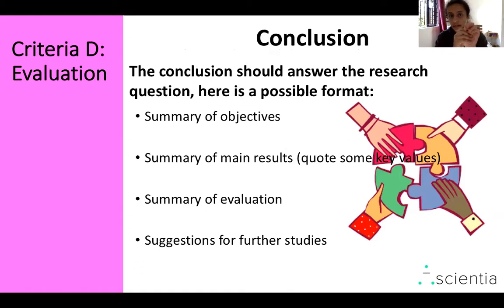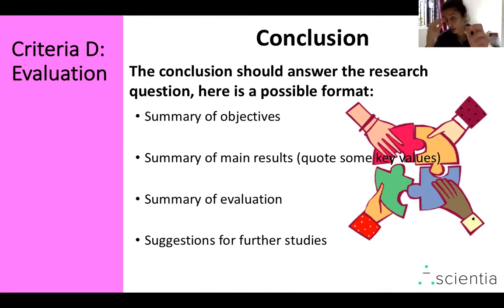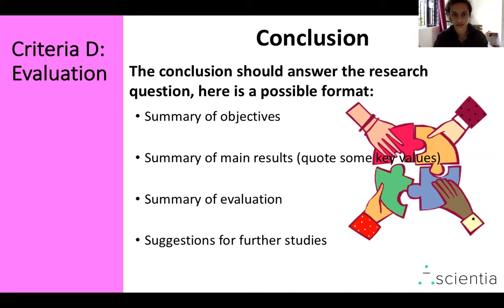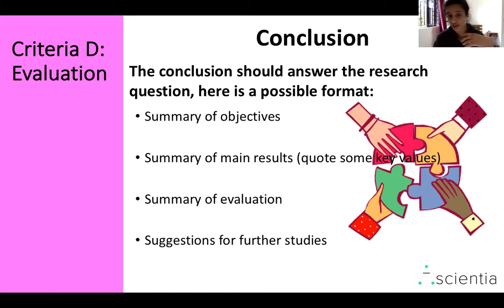The conclusion is an important part of your work — it must answer your research question. I structure my conclusions in four paragraphs: the first is a summary of the objectives of the study; the second is a summary of the main results, quoting some important values; the third is a summary of the evaluation covering the main strengths and limitations; and the fourth paragraph contains any suggestions for further studies.